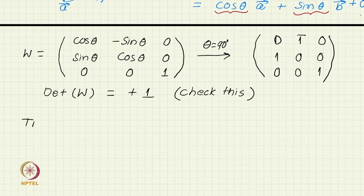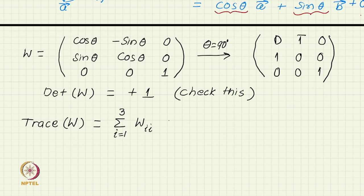But now let us write the trace. What is the trace of a matrix? Sum of the diagonal elements. This is the definition of trace. In this particular case, if we apply, what do we get? 2 cos theta plus 1.